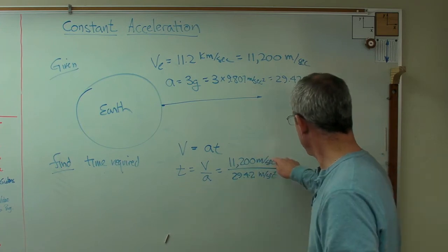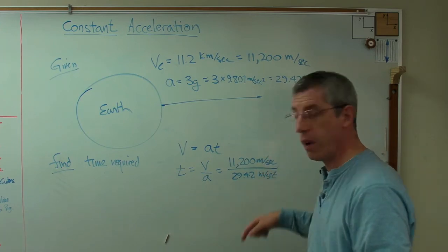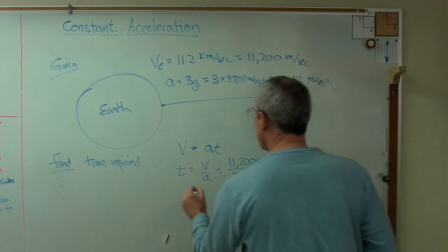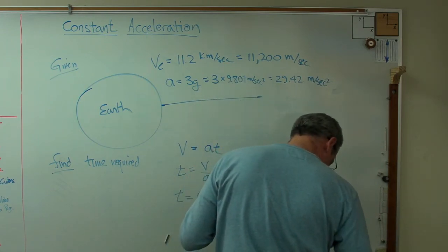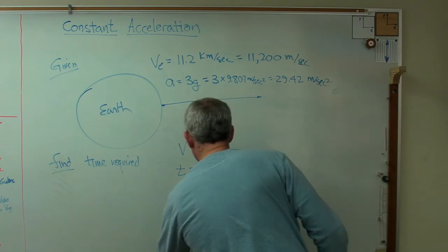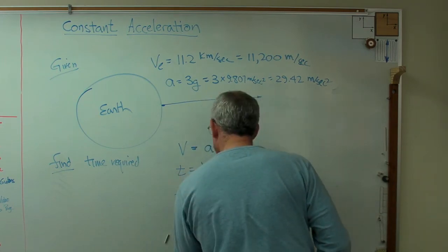Now, are the units going to work out? Meters per second divided by meters per second squared is going to give us seconds. And in seconds, that comes out to 380.7 seconds.